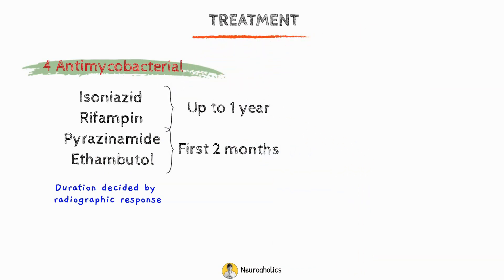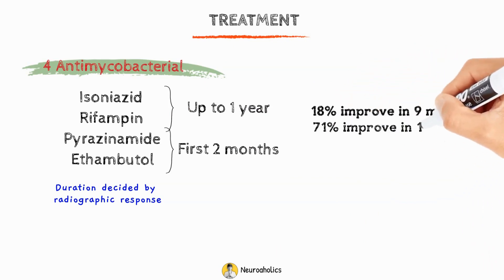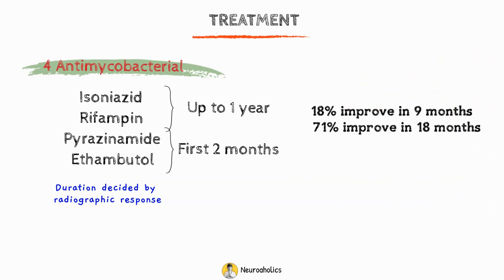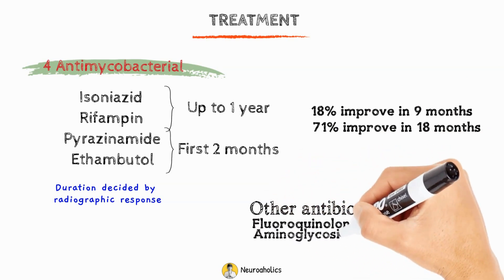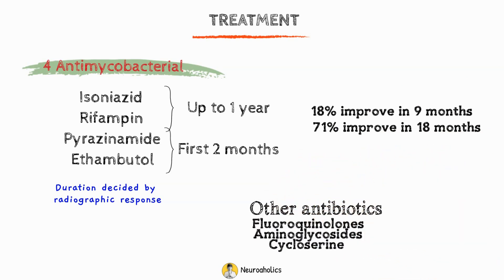All drugs have excellent brain penetration but are not all bactericidal. One study found that 18% of patients responded at 9 months, while 71% showed improvement within 18 months. After 8 weeks, if there is still no improvement, a different course of antibiotics should be tried. Some of the newer fluoroquinolones, aminoglycosides, and cycloserine may be needed to compensate for the rise in drug resistance.